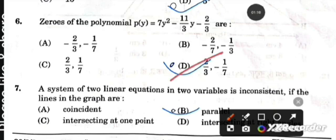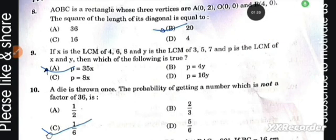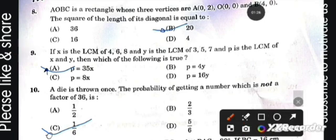Next question: A system of two linear equations in two variables is inconsistent if the lines in the graph are parallel. Question number eight: AOBC is a rectangle whose three vertices are (0, 2), (0, 0), and (4, 0). The square of the length of its diagonal is equal to 20.